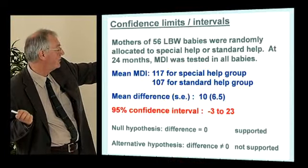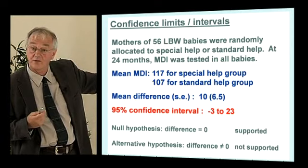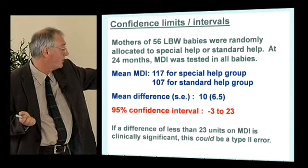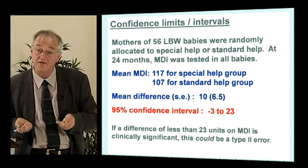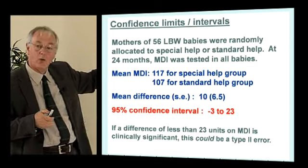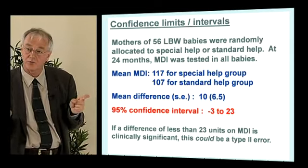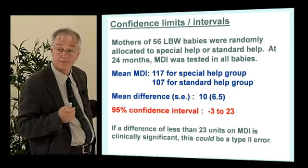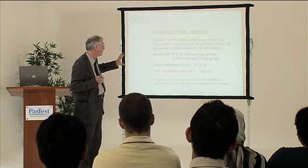If I increase the standard error to 6.5, the confidence interval becomes minus 3 to plus 23. Now the null hypothesis value of zero is inside that confidence interval — we can't exclude zero — so we have to say the difference is not statistically significant. But we also have to ask: would a difference of 23 units be clinically significant? If yes, then we've failed to find statistical significance but can't exclude a clinically important difference — this could be a type 2 error. This is precisely why comparative studies cannot now be published in reputable journals without confidence intervals.